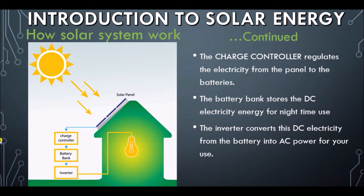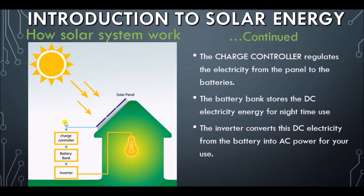This electricity goes to the charge controller. What is the work of the charge controller? The charge controller regulates the electricity from the panel to the battery. Remember that the intensity of sunlight is not stable due to the movement of clouds and the time of day. This means the electricity generated by the panel will be proportional to the solar irradiation — when the sun increases and photons increase, there will be more electrical energy. Because this electrical energy is not stable, you will need a charge controller.